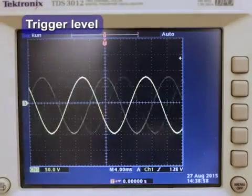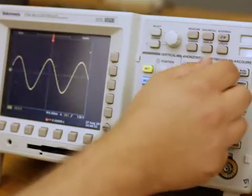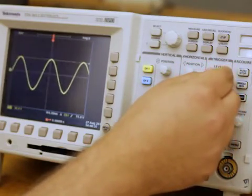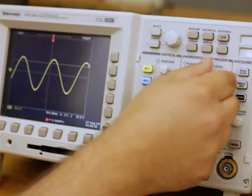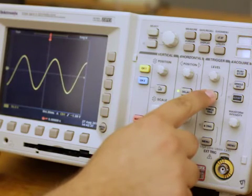The trigger level is the voltage that a signal crosses to cause synchronization of the oscilloscope. Proper triggering minimizes noise in the display. Adjust the trigger knob to set the trigger level manually, or press set level to 50% to set it automatically.